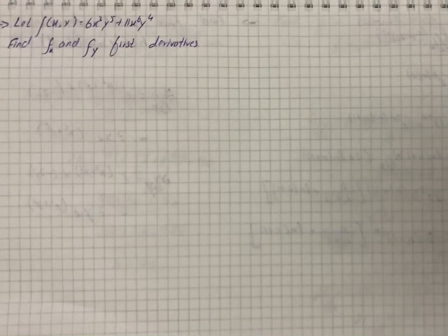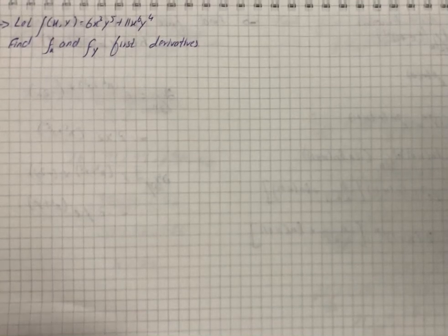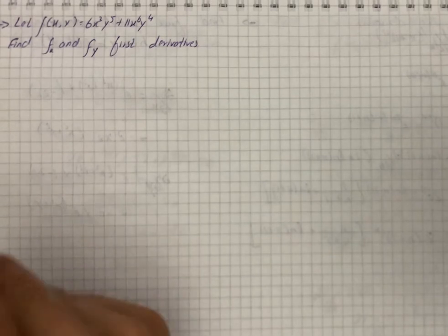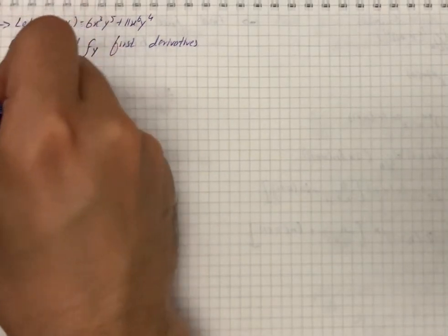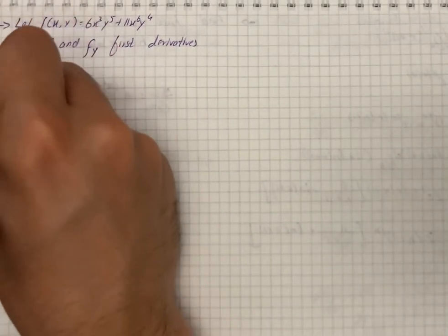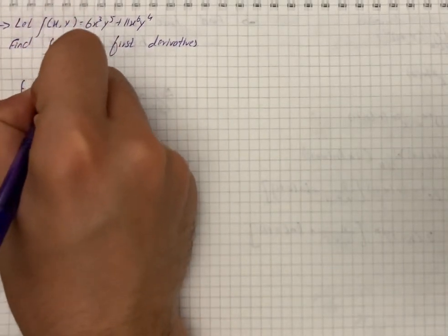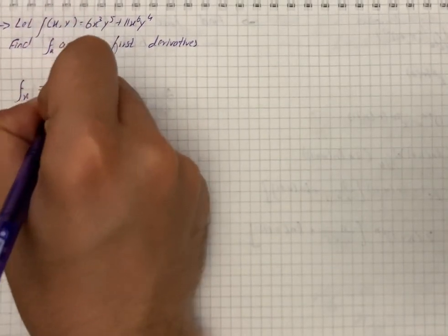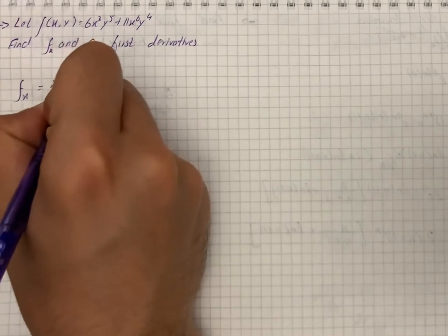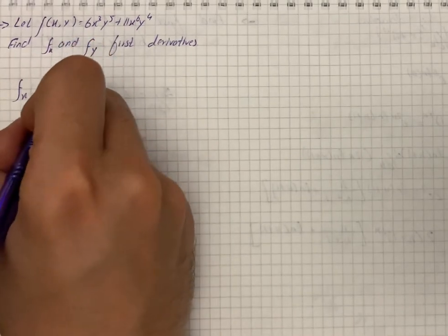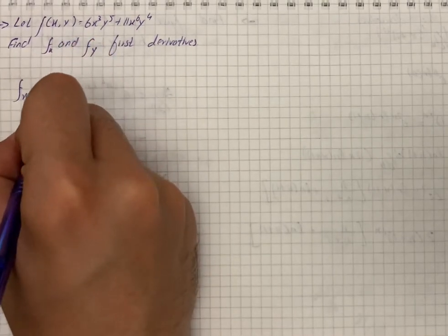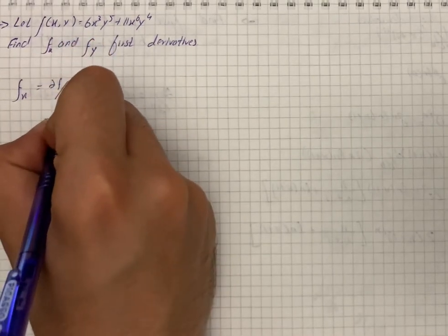Here we have to find the partial derivatives fx and fy. First of all we find fx, which is equal to the partial derivative of f over the partial derivative of x, so it gives us by putting values: